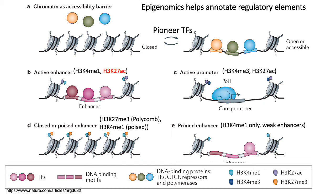It's worth noting that poised enhancers seem to segregate close to developmental genes, whereas primed enhancers can be found all over the genome. Part D of the diagram may suggest that poised enhancers are closed, but that's not actually the case — poised enhancers tend to be nucleosome-free regions that just have the polycomb repressive mark. The nucleosomes shown in that part of the figure illustrate that closed or inaccessible regions of the genome also tend to be associated with polycomb repressive marks.